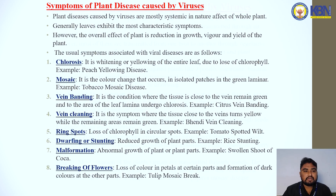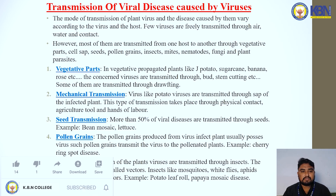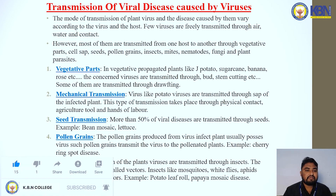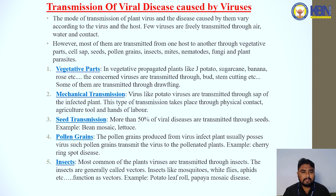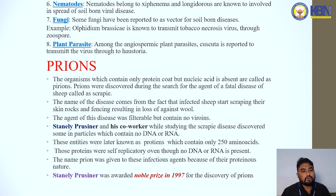The mode of transmission of plant viruses varies according to the virus and the host. A few viruses are transmitted through air, water, and contact. However, most are transmitted from one host to another through vegetative propagation, cell sap, seeds, pollen grains, insects, mites, nematodes, fungi, and plant parasites — including mechanical transmission, seed transmission, and pollen grains.